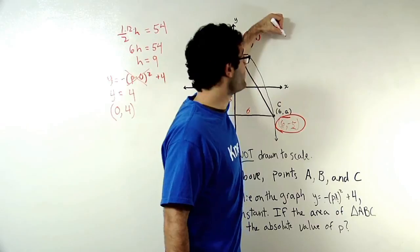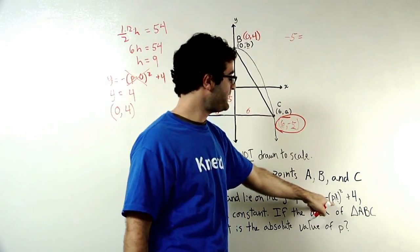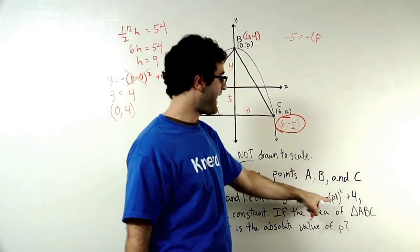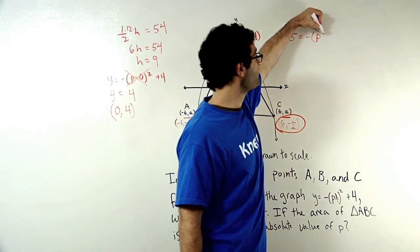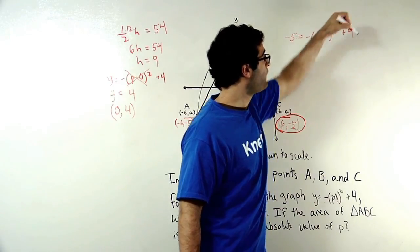So instead of Y equals, I'll say negative 5 equals negative P times X. But instead of saying X, I can just say my X coordinate, which is 6 squared plus 4.